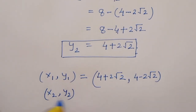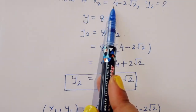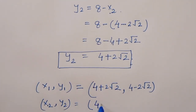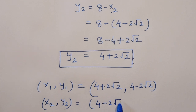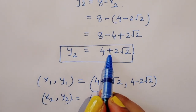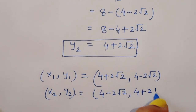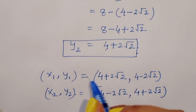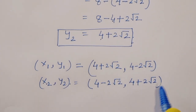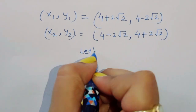And x2 y2 — when x2 is equal to 4 minus 2 root 2, y2 is equal to 4 plus 2 root 2. Now let's verify these values are correct.